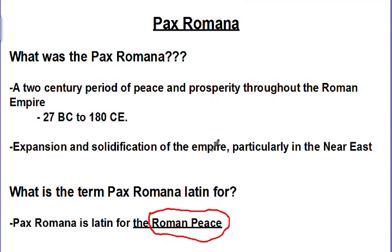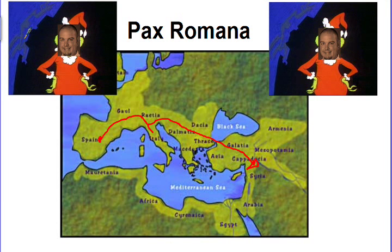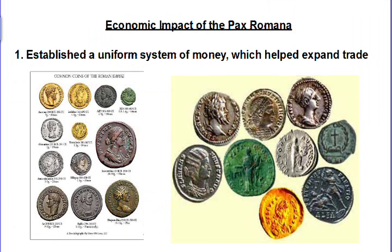They expanded the empire, solidified it, made laws, made sure everything was secure, and they had this period of prosperity and peace. You could trade from one end of the empire to the other — you could be in Spain, travel all the way to Italy, into Asia Minor towards Persia, travel by sea — and you would be basically safe and secure, with the opportunity to advance in society.